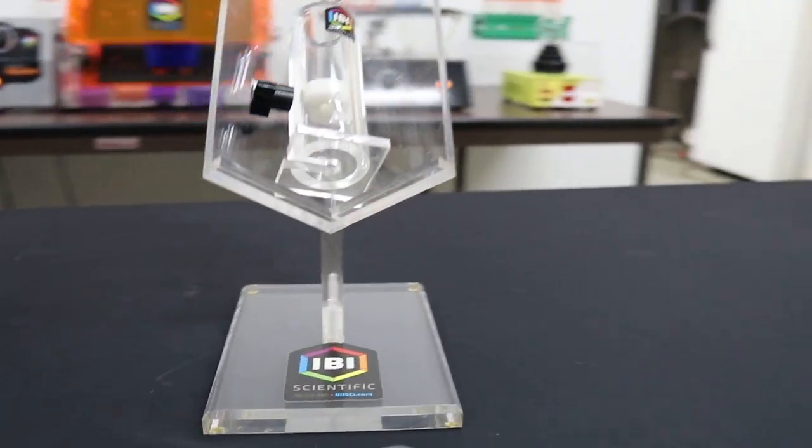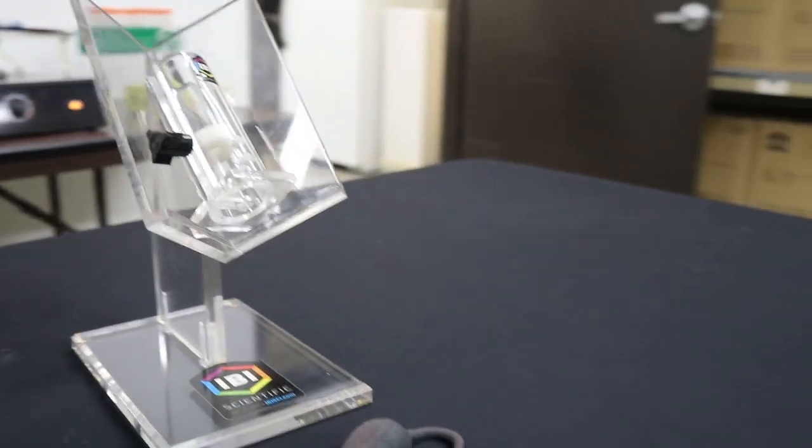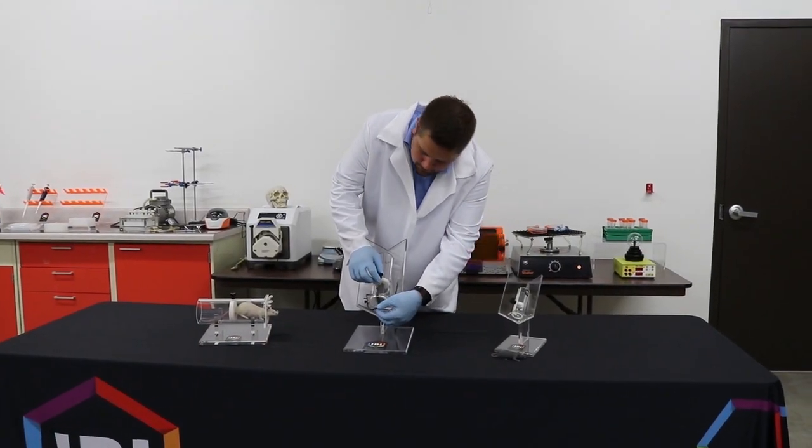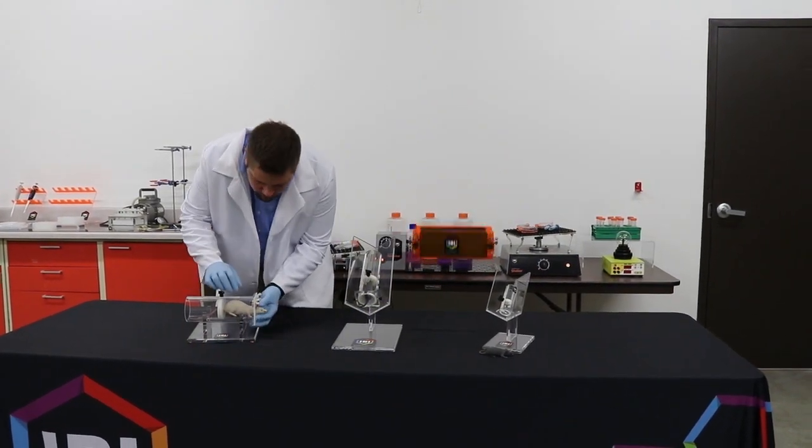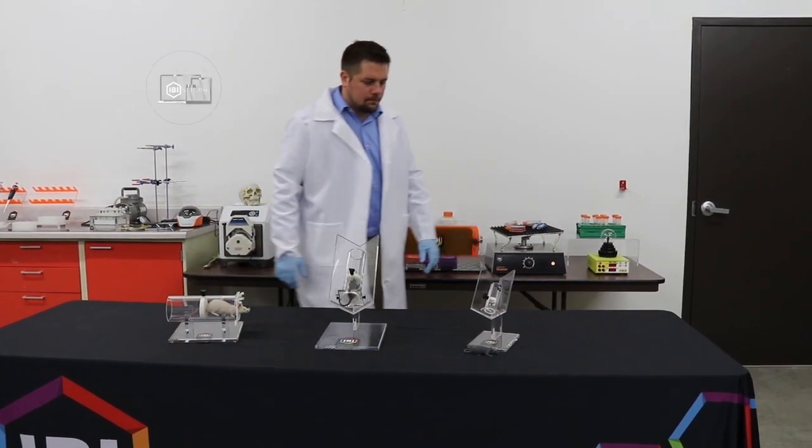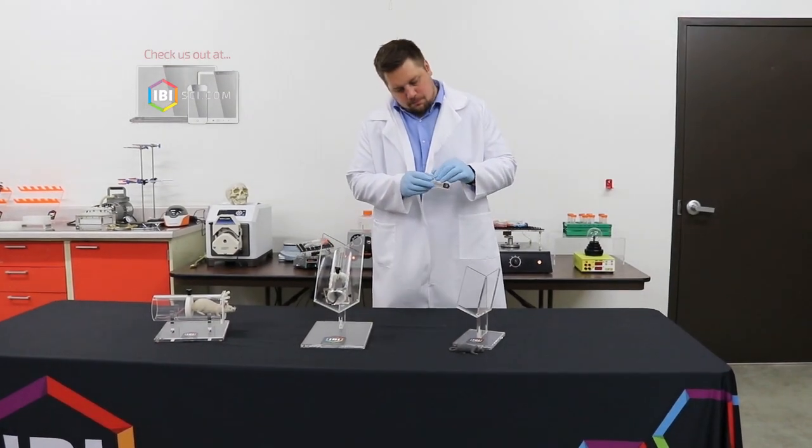The MH-100 mouse restraint is designed to keep both the animal and handler safe in today's life science research lab. The unit comes complete with an adjustable nose restraint and tightening knob to accommodate varying animal sizes.